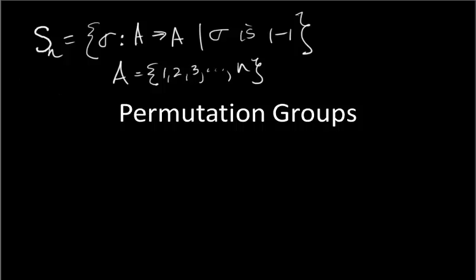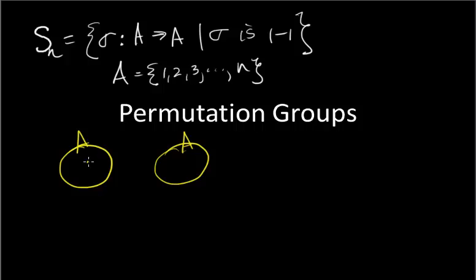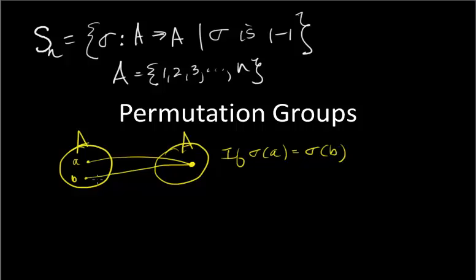Let's review what a one-to-one function is. A function is one-to-one — let's say this is its domain, which would be A, and its range would also be A. If A and B get mapped to the same element, in other words if sigma(A) equals sigma(B), this picture just can't happen. We cannot have two different things mapped to the same image. So we say: if sigma(A) equals sigma(B), then we must conclude that A equals B. This is how you prove a function is one-to-one — suppose the function evaluated at A equals the function at B, then prove A must equal B.